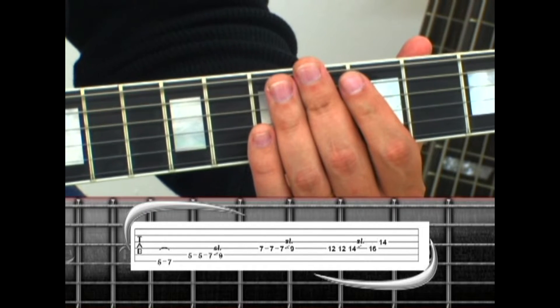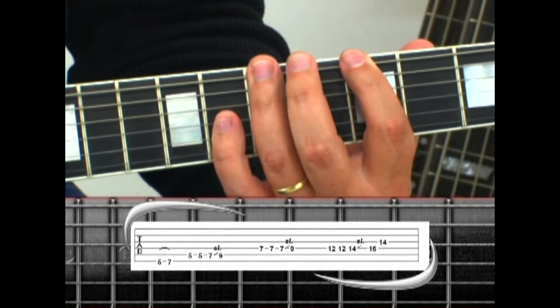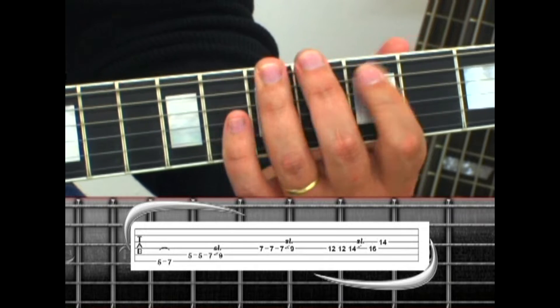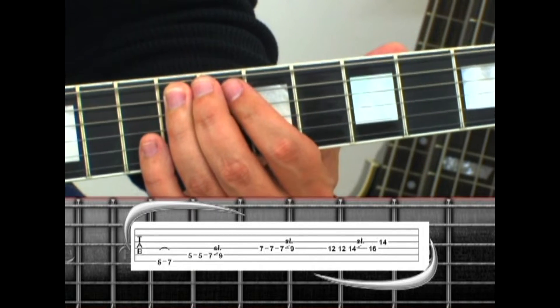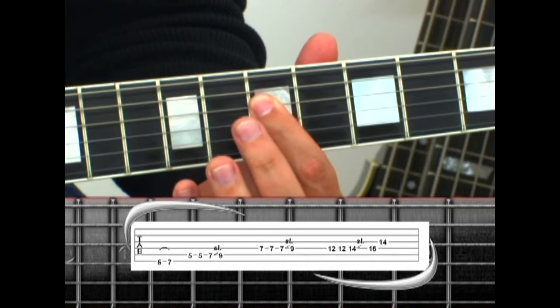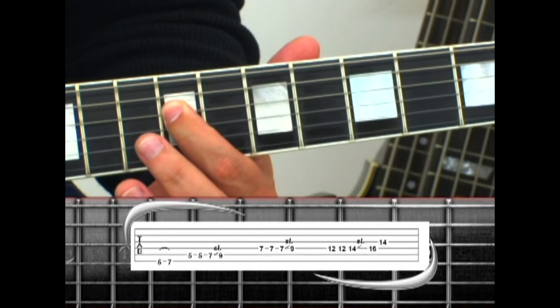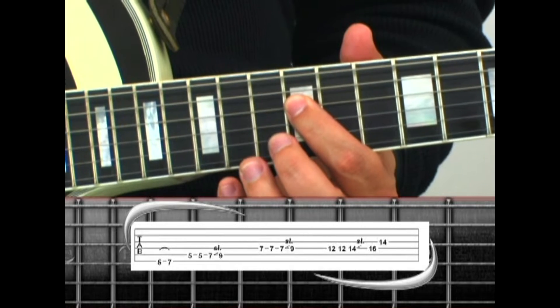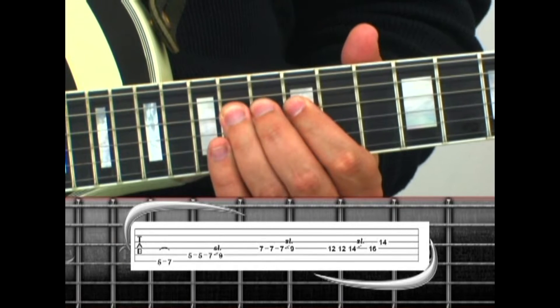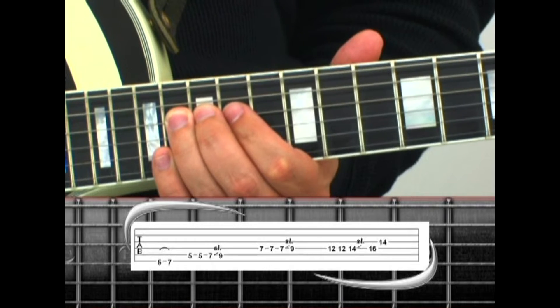In Phrase 10, hammer the 6th string 5 to 7, double pick the 5th string 5, 7 slide to 9, triple pick the 4th string 7, slide to 9, index finger up to 12, 12, 14, slide to 16, 3rd string 14.